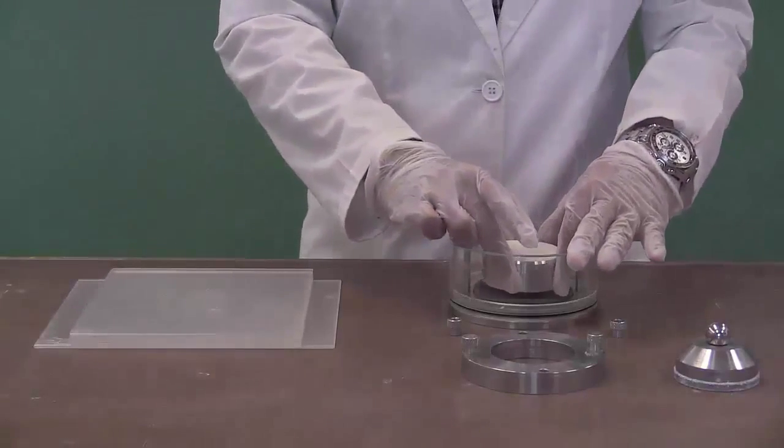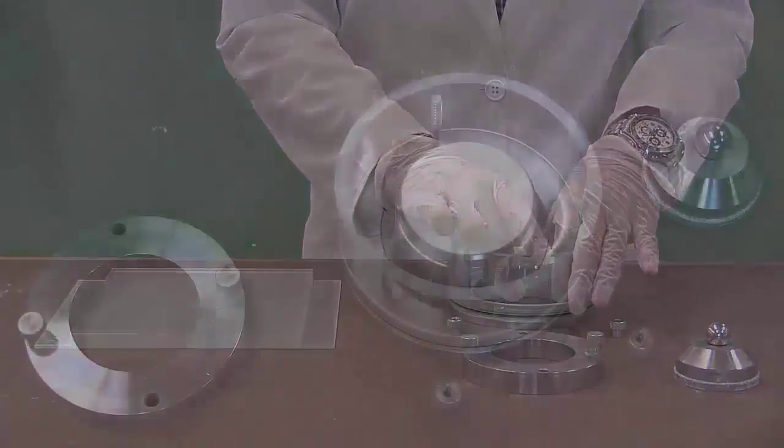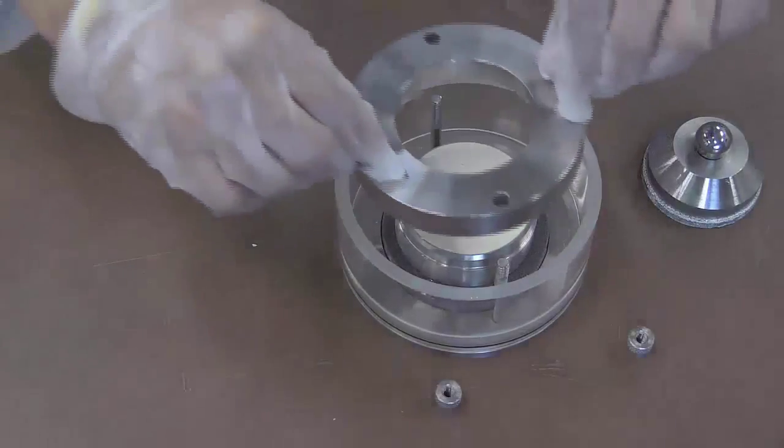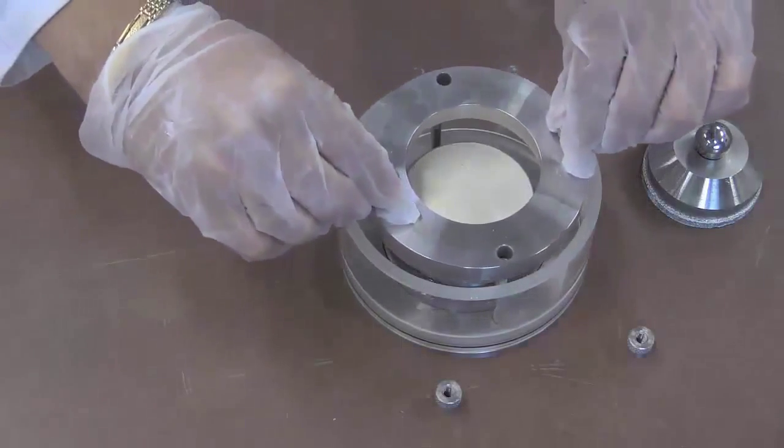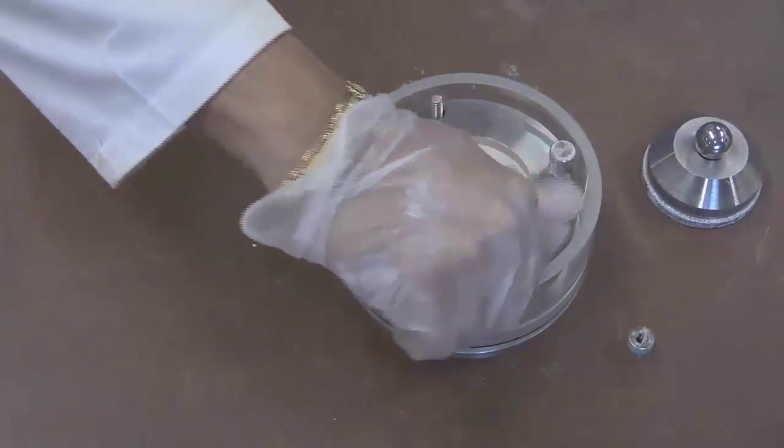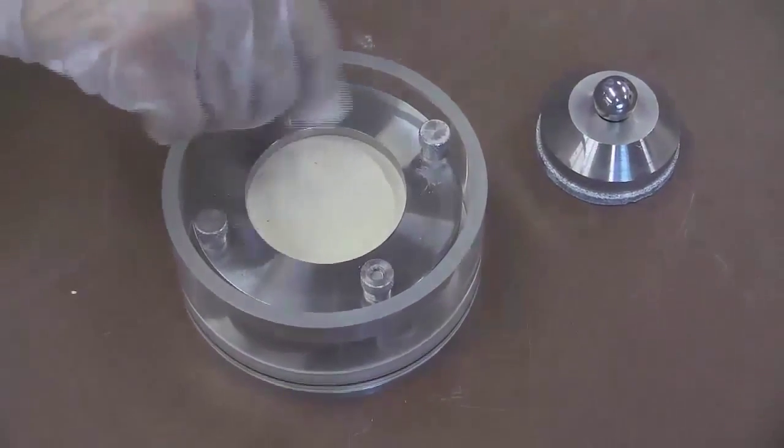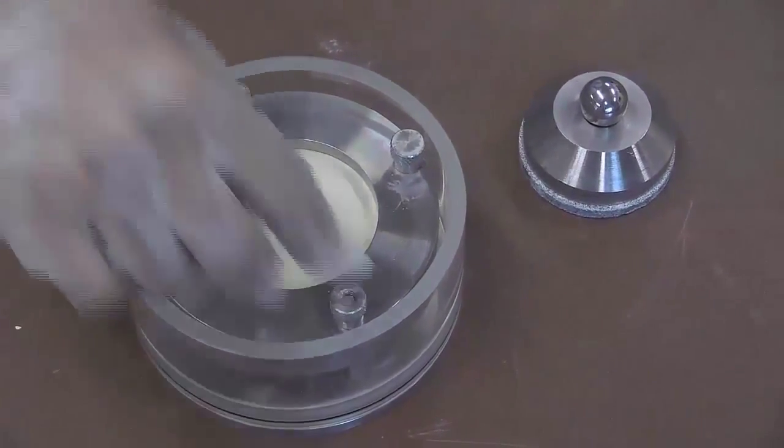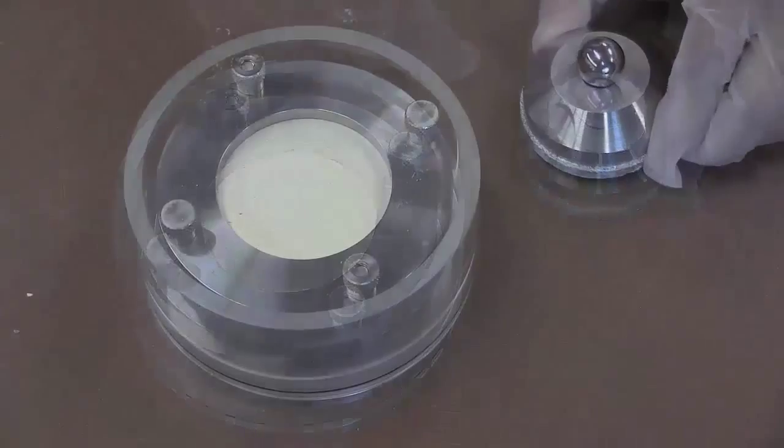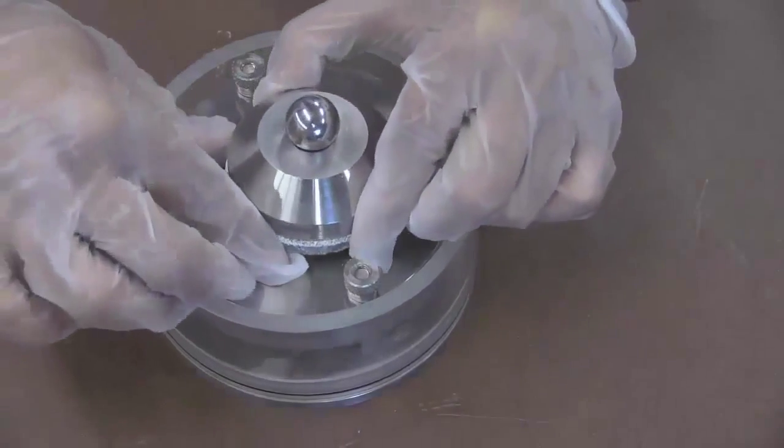Place the specimen at the center of the bottom porous plate. Note that the sharp edge of the rings should be facing upward. Place the positioning ring and secure it with the two nuts. Carefully place the top porous plate cap assembly and ball on the specimen.